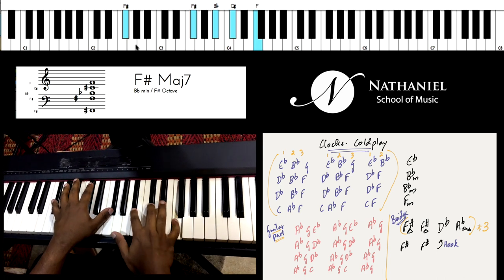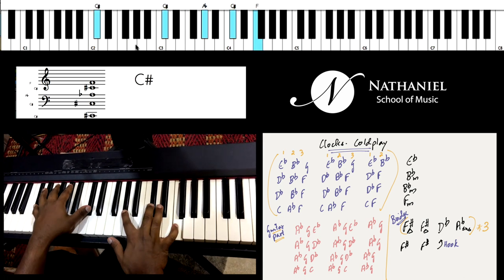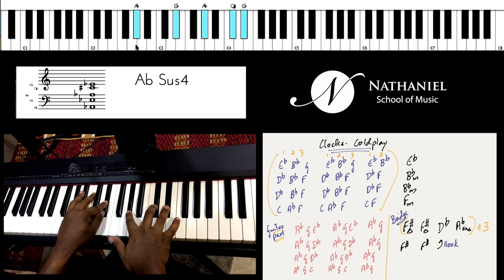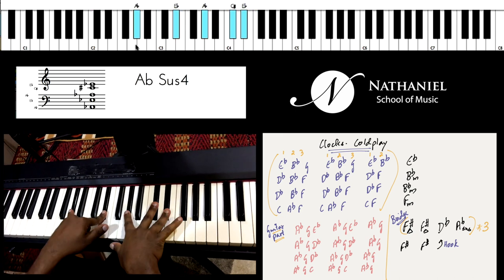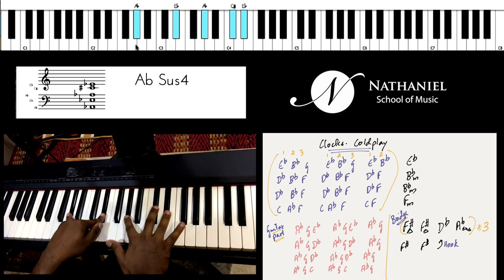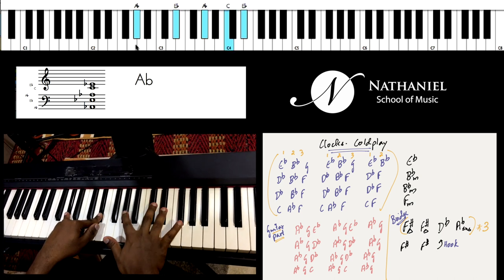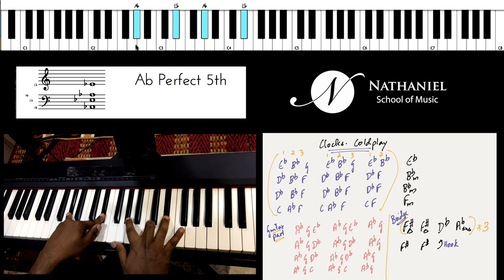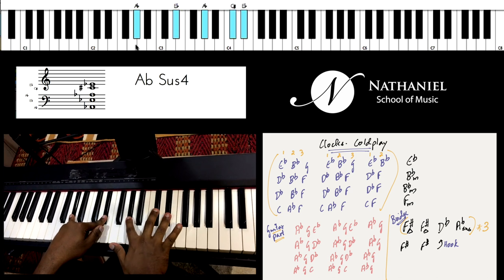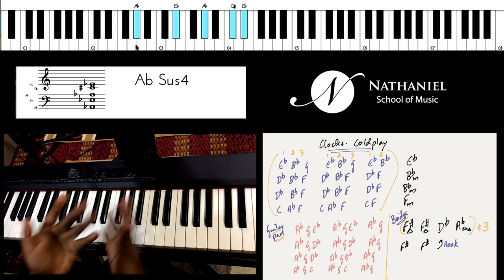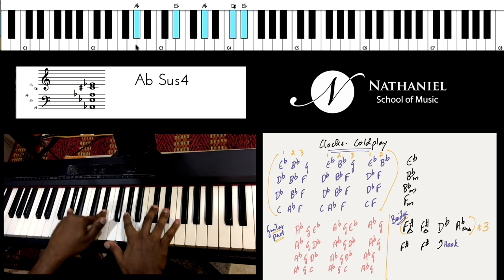And nothing else compared, D-flat. And then A-flat suspended 4. It's a very interesting chord. So instead of playing A-flat major, you remove the 3rd and you play the perfect 4th or D-flat, or you can just see what I'm doing and copy it. Okay?